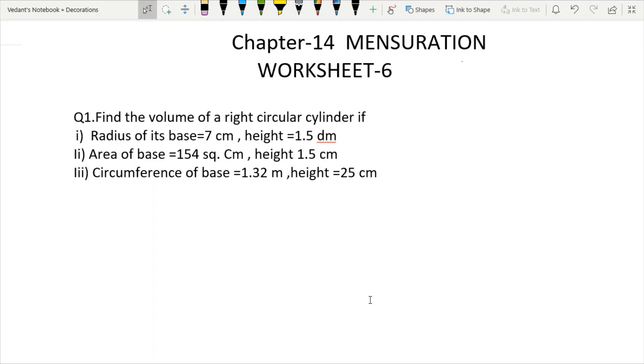Chapter 14, Mensuration, Worksheet 6. Question 1: Find the volume of a right circular cylinder if radius of its base is 7 cm and height is 1.5 dm.